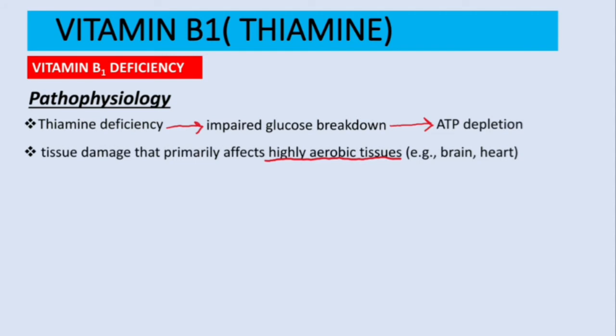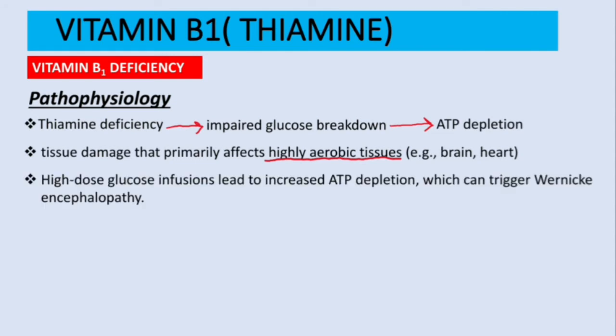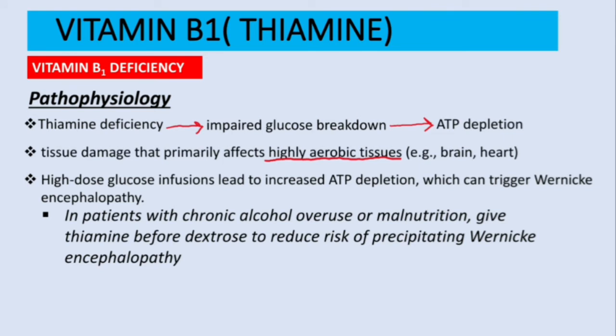High glucose infusions can trigger Wernicke encephalopathy. Therefore, in patients with chronic alcohol overuse or malnutrition, always administer thiamine before dextrose — this reduces the risk of precipitating or exacerbating Wernicke encephalopathy.